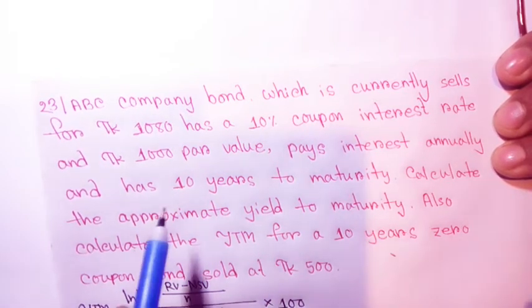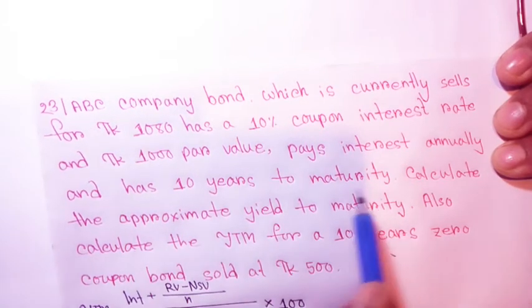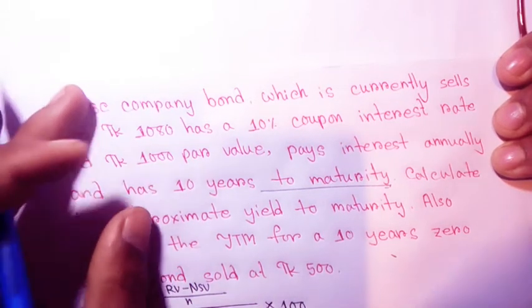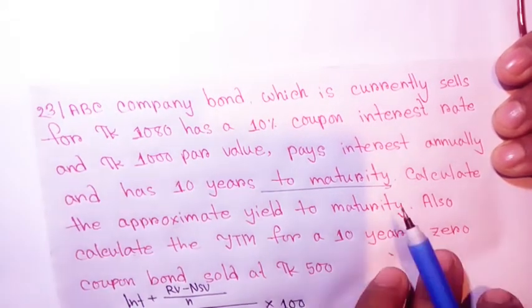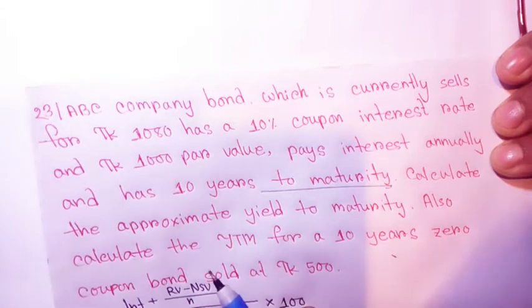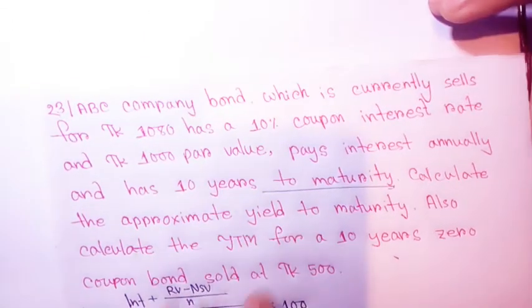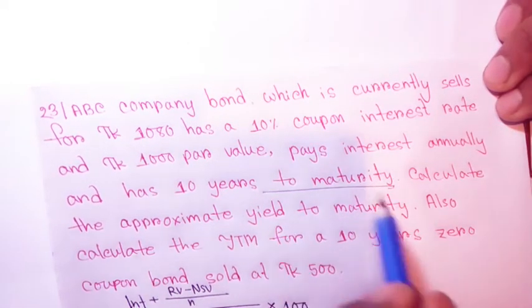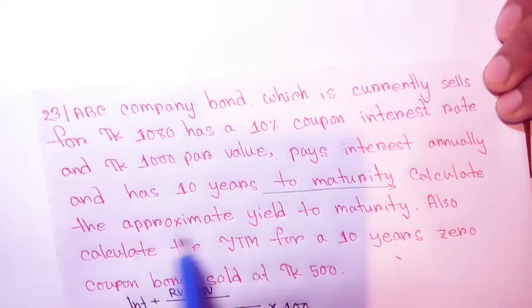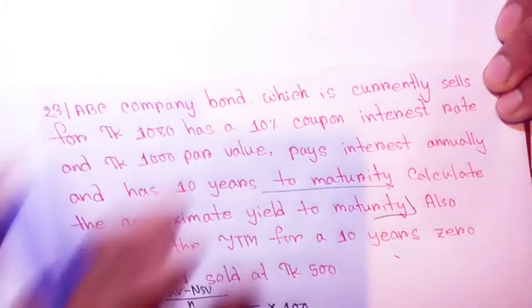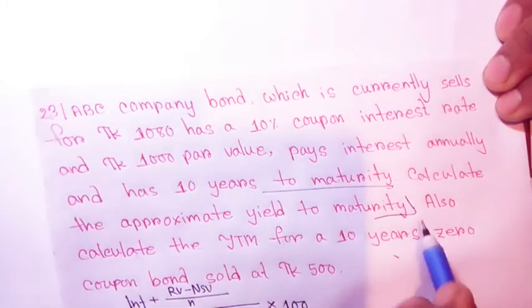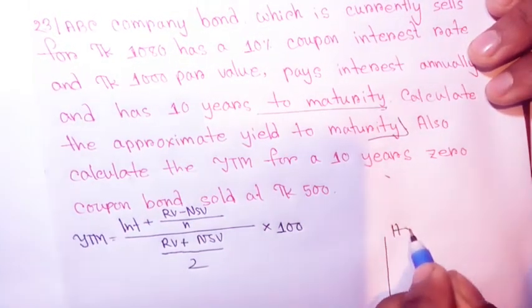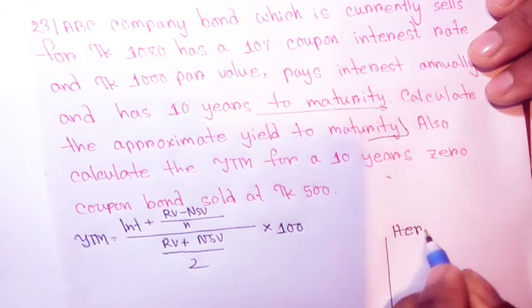Also calculate the YTM for a 10 years zero coupon bond sold at 500. The yield to maturity calculation requires specific information. The YTM formula is: interest plus (RV minus NSV) by n, divided by (RV plus NSV) by 2, times 100.